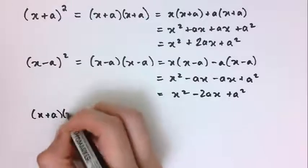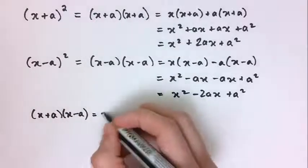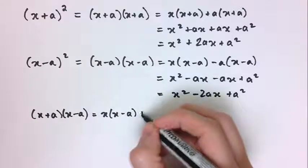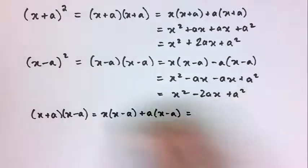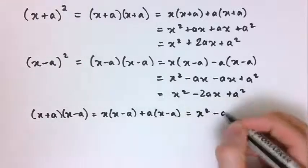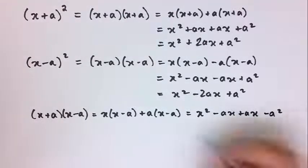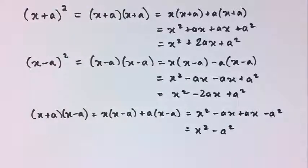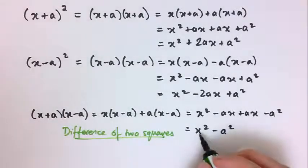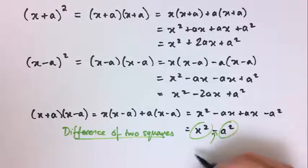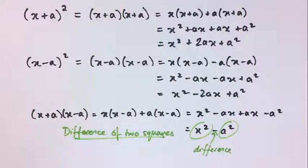Another really useful result: (x + a)(x - a) equals x times (x - a) plus a times (x - a), giving x squared minus ax plus ax minus a squared. The middle terms cancel, leaving x squared minus a squared. This is known as the difference of two squares — we have two squares, x squared and a squared, with a minus sign (a difference) between them.